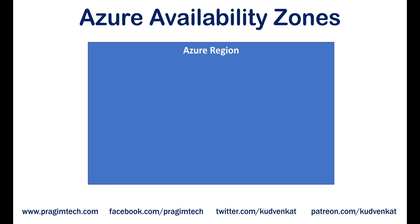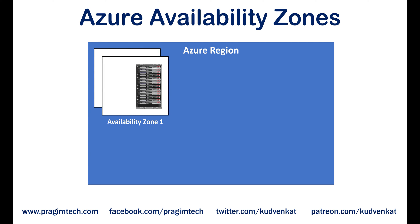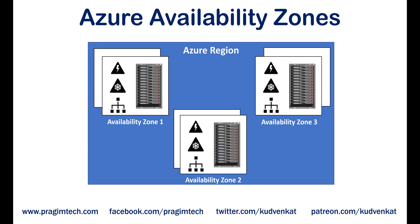Now, what is an Azure availability zone? An availability zone is a unique physical location within an Azure region. Each availability zone is made up of one or more data centers with independent power, cooling, and networking. Not all regions have availability zones. Regions that support availability zones have a minimum of three separate zones to ensure resiliency. If one of the availability zones goes down, we still have our applications and data available from the rest of the two availability zones. There is a physical separation between each availability zone, and it is this separation that protects our application and data from data center failures.